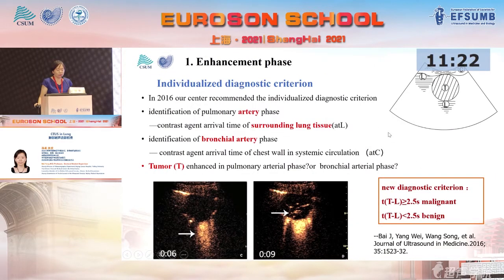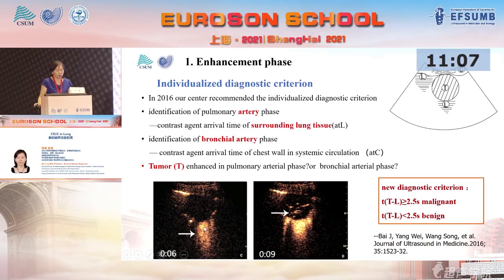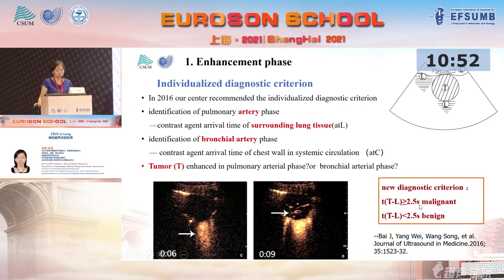In 2016, our center recommended new individualized diagnostic criteria. We use the arrival time of the surrounding lung tissue as a reference and calculate the difference in arrival time between the lung tissue and the lesion. Based on this, we propose a new diagnostic criterion: a time difference longer than 2.5 seconds suggests malignancy, while a shorter difference suggests benign lung lesions.